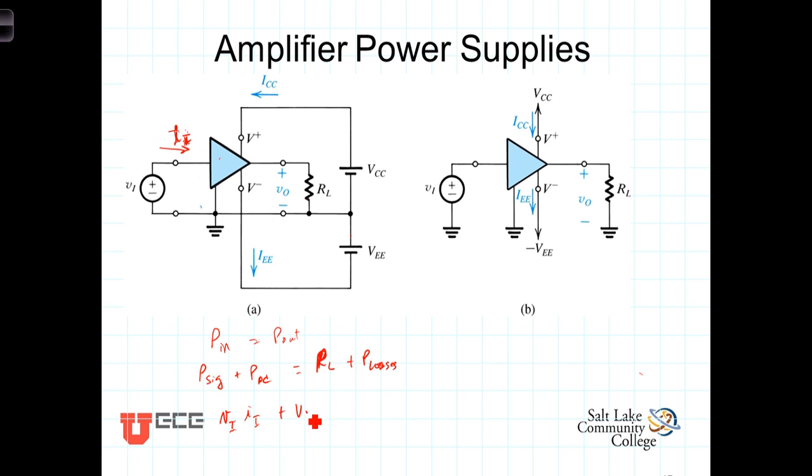So that would be plus VCC times ICC plus VEE times IEE. So we have three different sources of power, all combining inside the amplifier to give us the power to the load plus any of the losses there may have been.